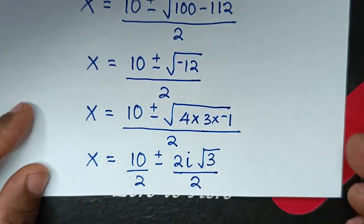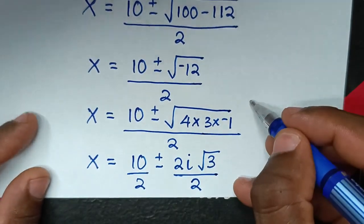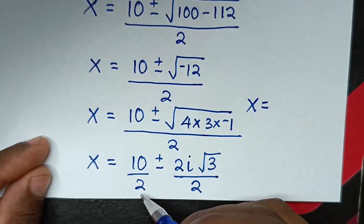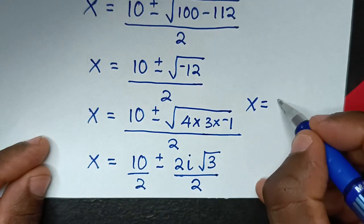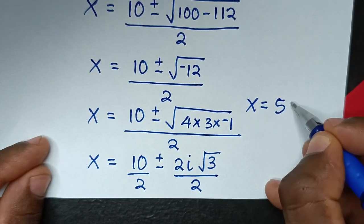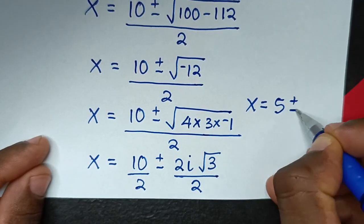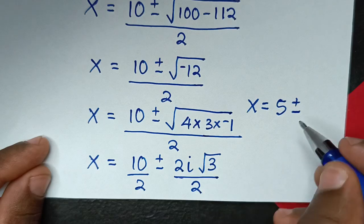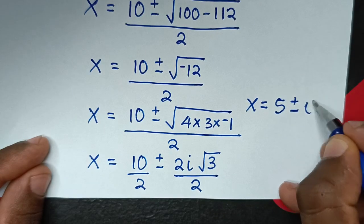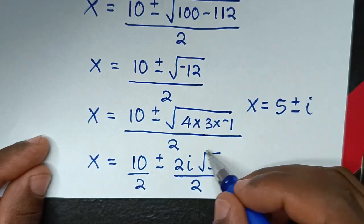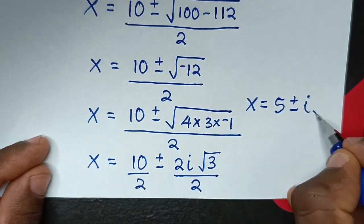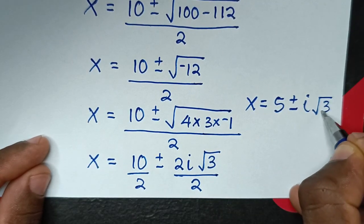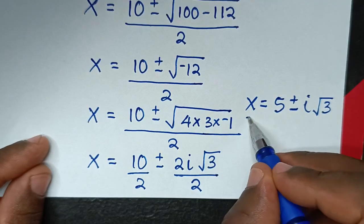Dividing by 2: 10/2 = 5, and 2i/2 = i. So x = 5 ± i√3. These are complex solutions.